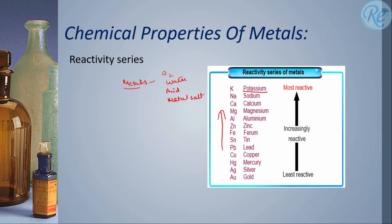Potassium, sodium, calcium, magnesium. These are taken as most reactive metals while here gold, silver, mercury, these are least reactive metals.